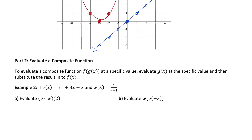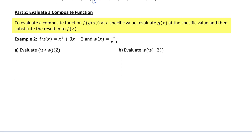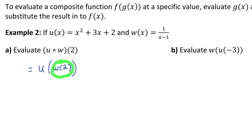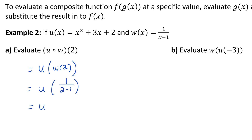Now let's go on to actually evaluating a composite function at a specific x value. In part 2, to evaluate a composite function f of g of x at a specific value, we start by evaluating g of x at that specific value, then substitute that result into the f of x function. For example, with functions u and w of x, let's figure out what u composed of w at 2 is equal to, or u at w of 2. We use the output of w of 2 as the input for u of x. Substituting 2 into w of x gives us u at 1 over 2 minus 1, which is u at 1 over 1, which is just u at 1.